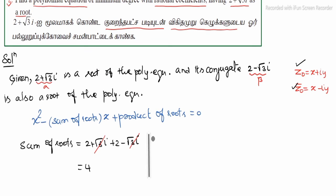Next, product of roots. That is alpha beta: 2 plus root 3i times 2 minus root 3i. Here we have a plus b times a minus b format, so it's a squared minus b squared.